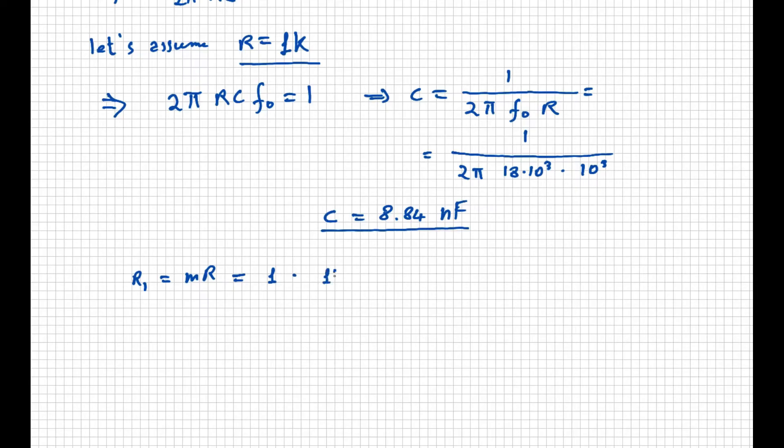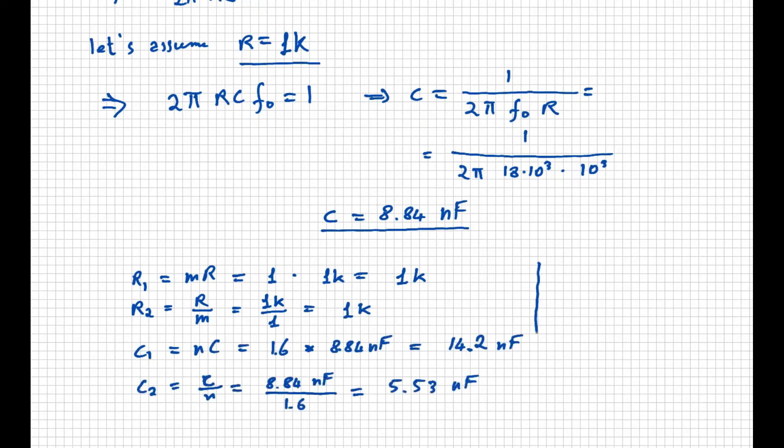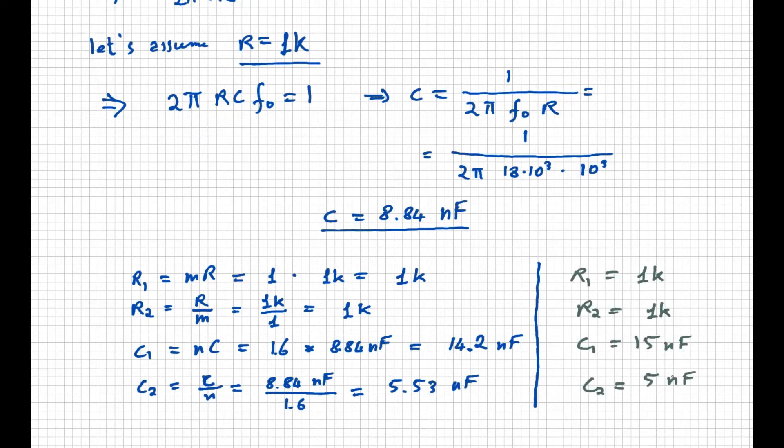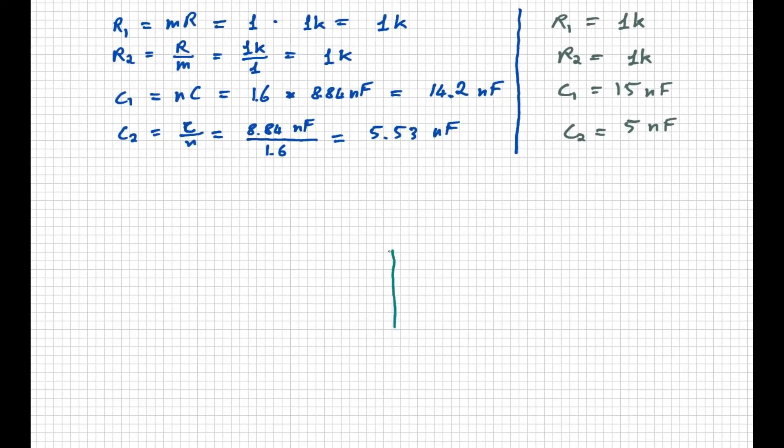So, this is for R1, this is for R2, this is for C1, and this is for C2. So, now we can draw the actual schematic for our filter, after adjusting the capacitors for the closest values that I have available.